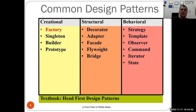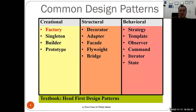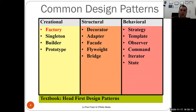The singleton design pattern allows you to always get the same one object of a type. Sometimes you have a pool of available objects - it's a similar idea to singleton, but instead of returning a single object, you return one element from a pool to customers.